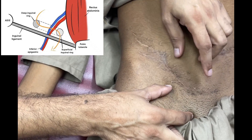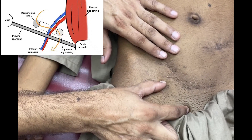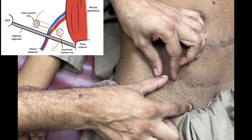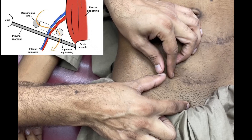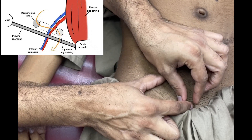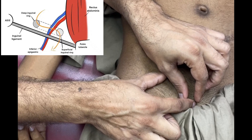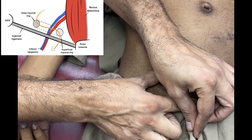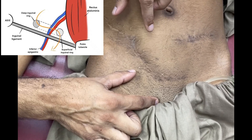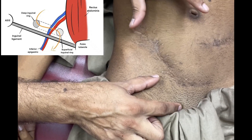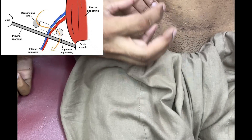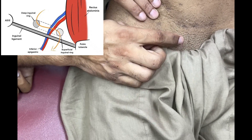An indirect inguinal hernia protrudes from the abdomen, comes out from the deep inguinal ring, traverses the inguinal canal, exits from the superficial inguinal ring, and goes into the scrotum. This is the indirect route, and that is why it is called an indirect inguinal hernia. A direct inguinal hernia, on the other hand, protrudes through Hesselbach's triangle.